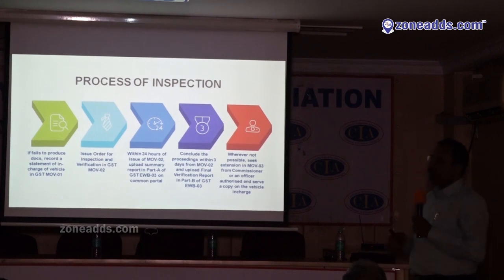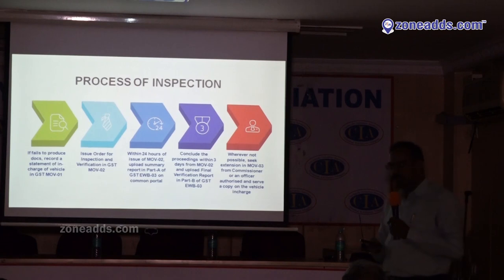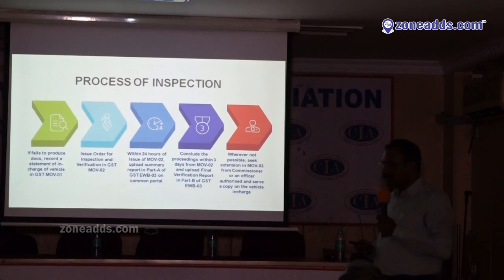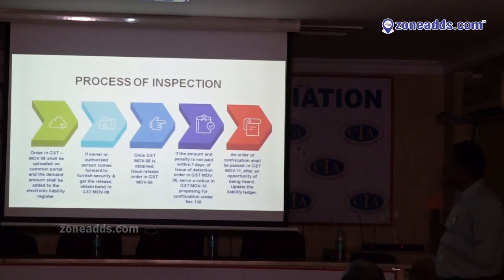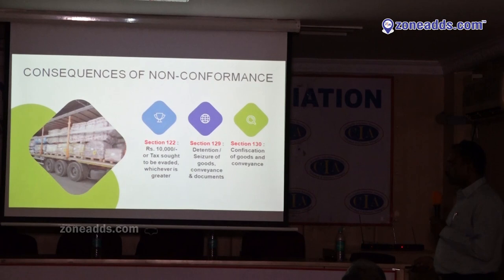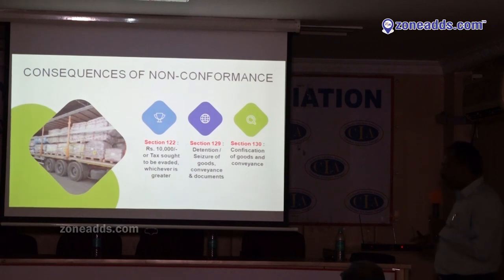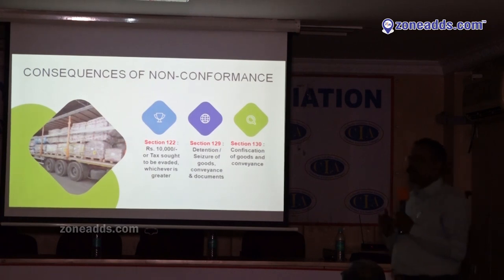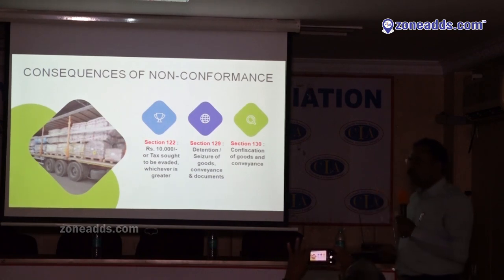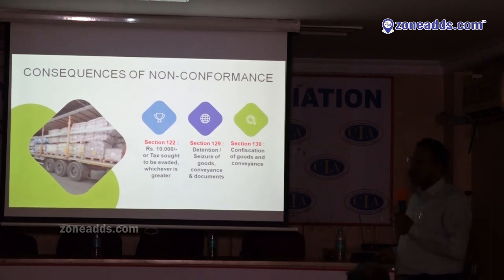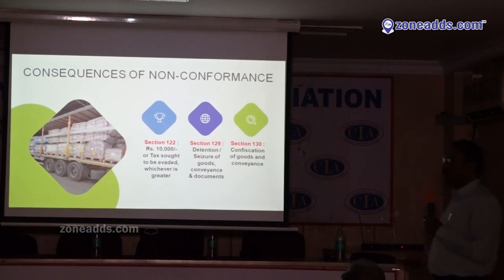If still the duty is not paid, under section 130 of the CGST Act, goods can be confiscated and put up for auction. If you don't generate the E-way bill, under section 122 the penalty is 10,000 rupees or the amount of GST on those goods, whichever is higher. Under section 129, goods can be seized, and under section 130, goods can be confiscated and auctioned for recovery of GST. Not only goods — the vehicle or conveyance can also be detained.